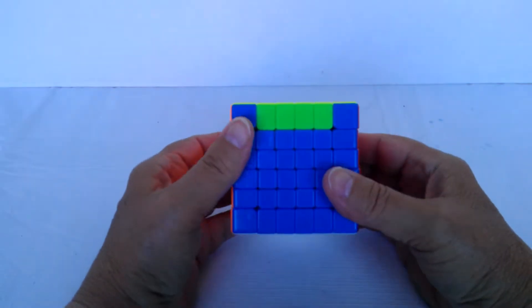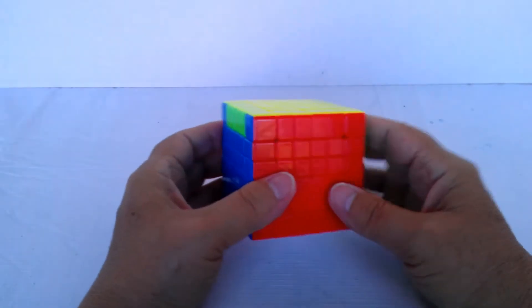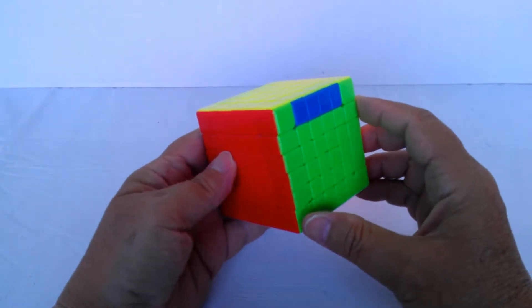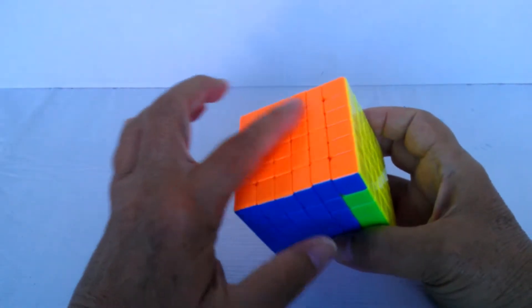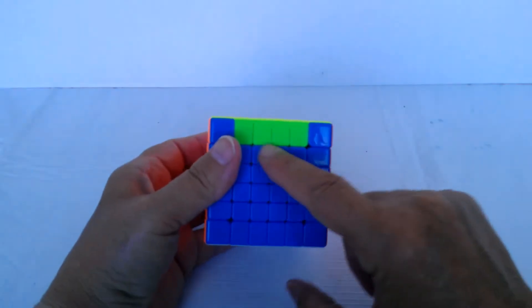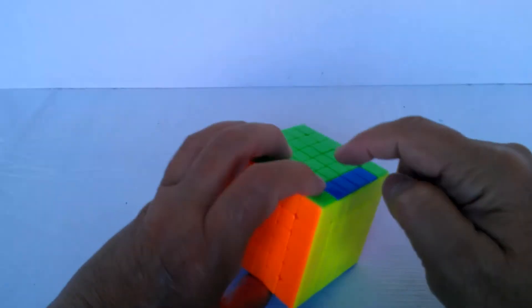This is the 6x6, and this is an even cube, obviously. We sometimes get this at the end where we have two sides that are solved, but opposite sides are not,